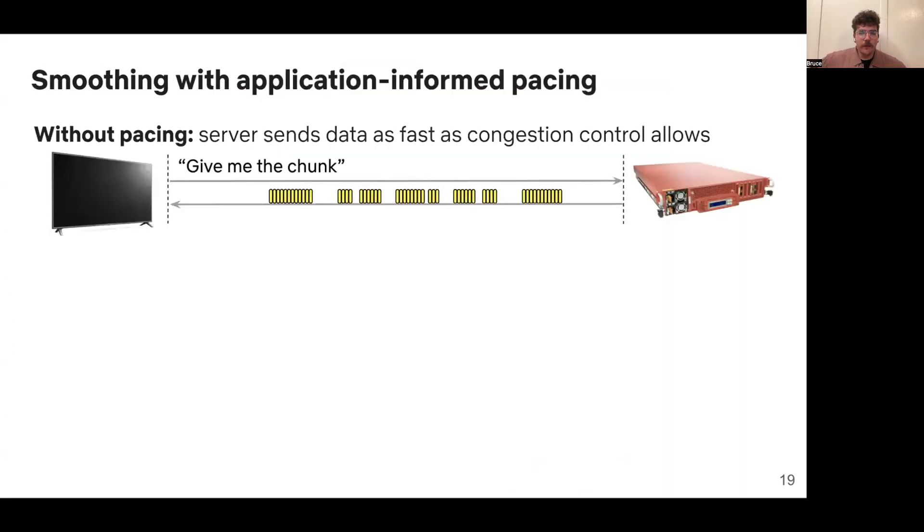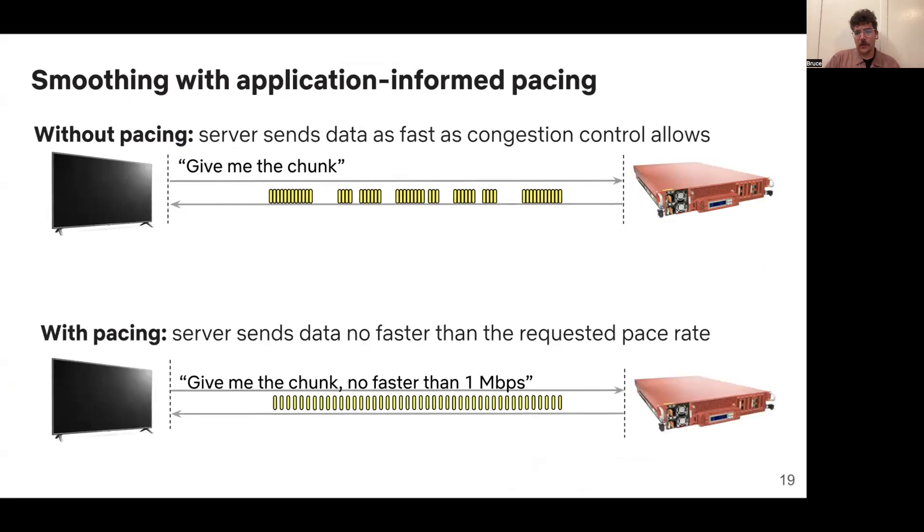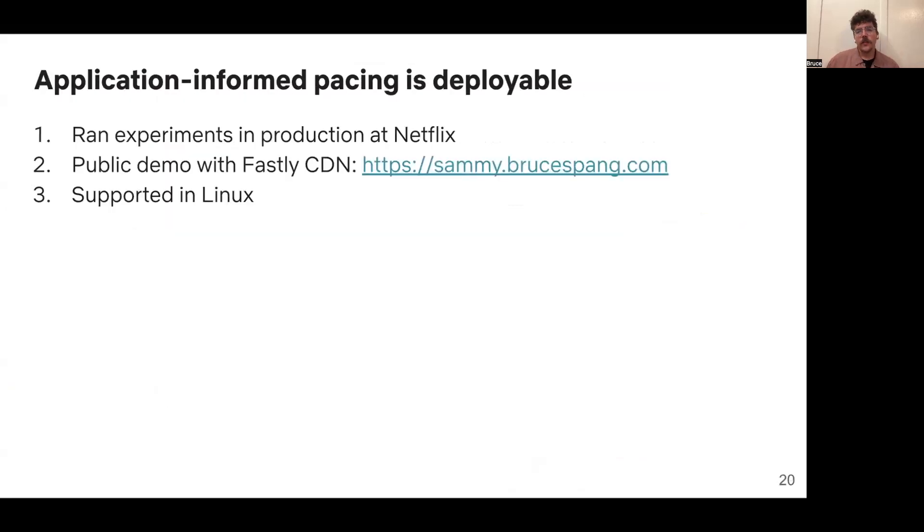So the mechanism we use to smooth out video traffic is called application-informed pacing. Without pacing, the server is going to send data as fast as allowed by a congestion control algorithm. With pacing, the ABR algorithm is going to request an upper limit or pace rate, and the server will send no faster than that pace rate. This is basically your standard TCP pacing, except the pace rate is picked by the ABR algorithm instead of congestion control. Application-informed pacing is very deployable on the internet today. We're going to tell you in a moment about experiments we ran in production at Netflix. We have a public open source demo with the Fastly Content Delivery Network, and it's also supported pretty much out of the box in most recent versions of Linux.